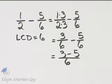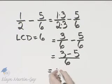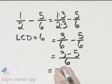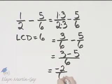And now let's simplify 3 minus 5. If you need to, go ahead and write it as 3 plus negative 5. Whichever way you go, 3 minus 5 is negative 2 over 6.